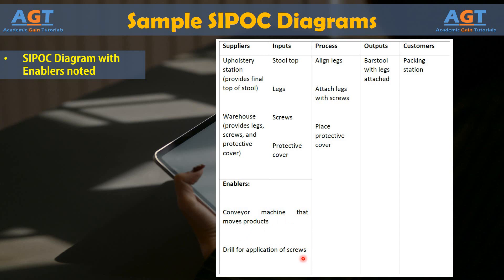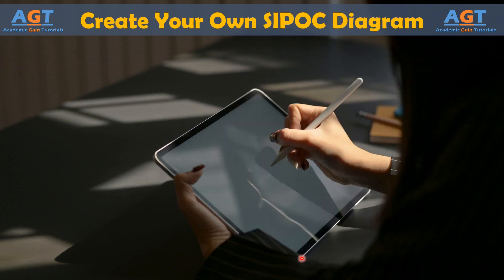Without the conveyor machine, the people involved in this process would have to move items manually. The conveyor isn't 100% required for legs to be added to the stool, but it enables the process to move at a more efficient pace. A case could be made that the drill isn't required either — screws can be installed manually — but it's certainly what enables the process to move at a speed required for mass production. With just this simple SIPOC diagram of a process, a Six Sigma team would already have some idea about where variation could be hiding, what drives efficiencies in the process, and how the process relates to the overall business.